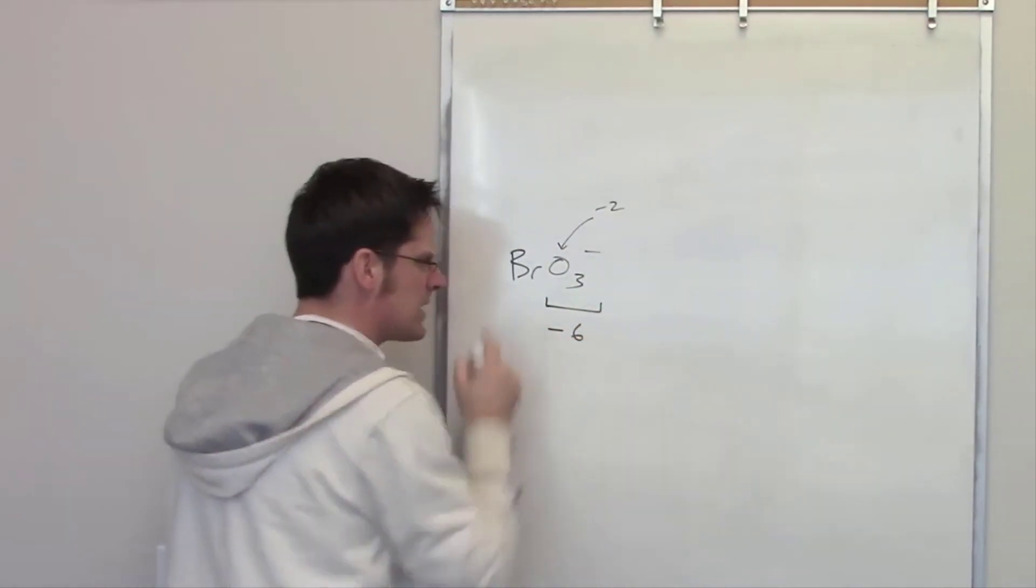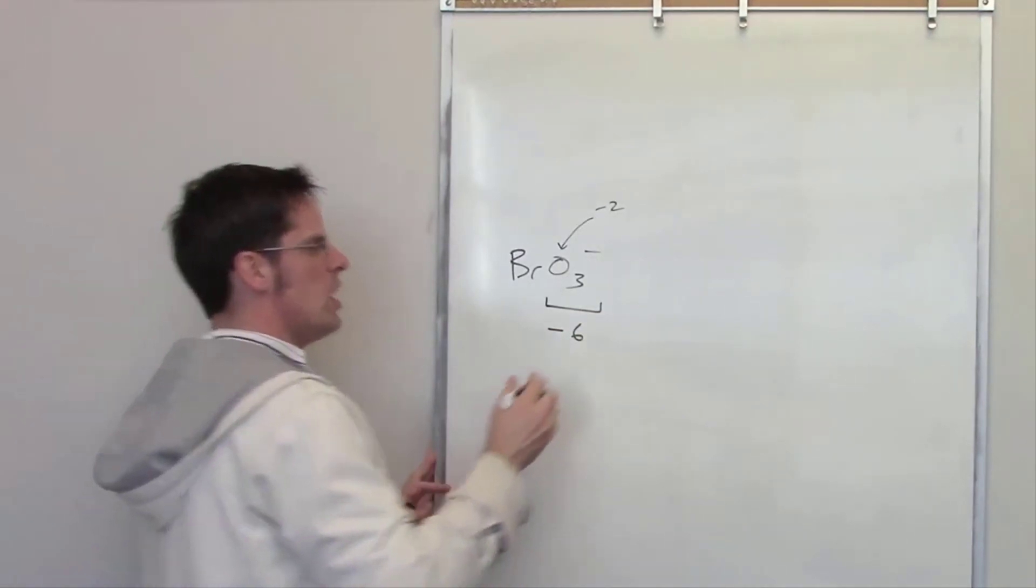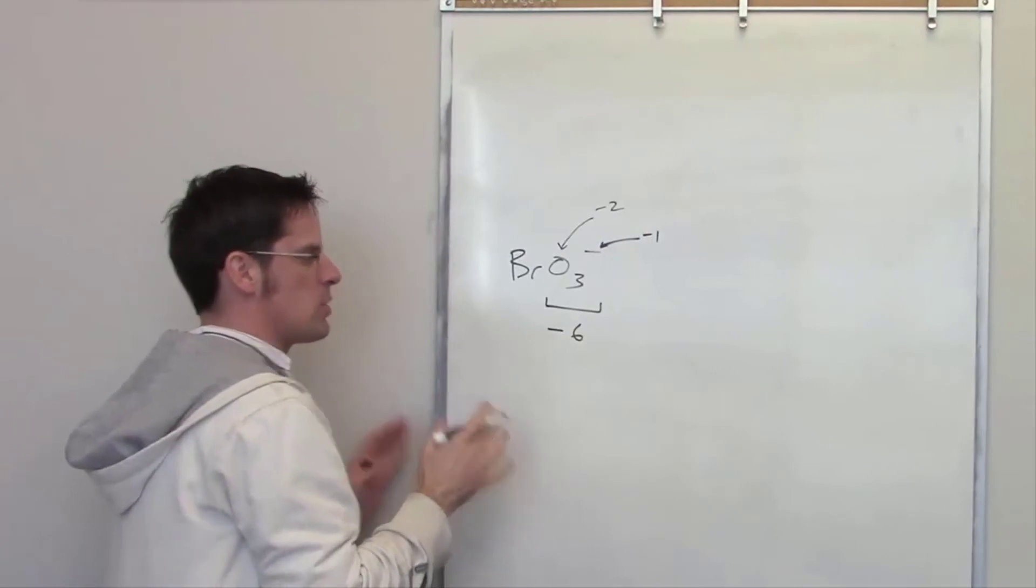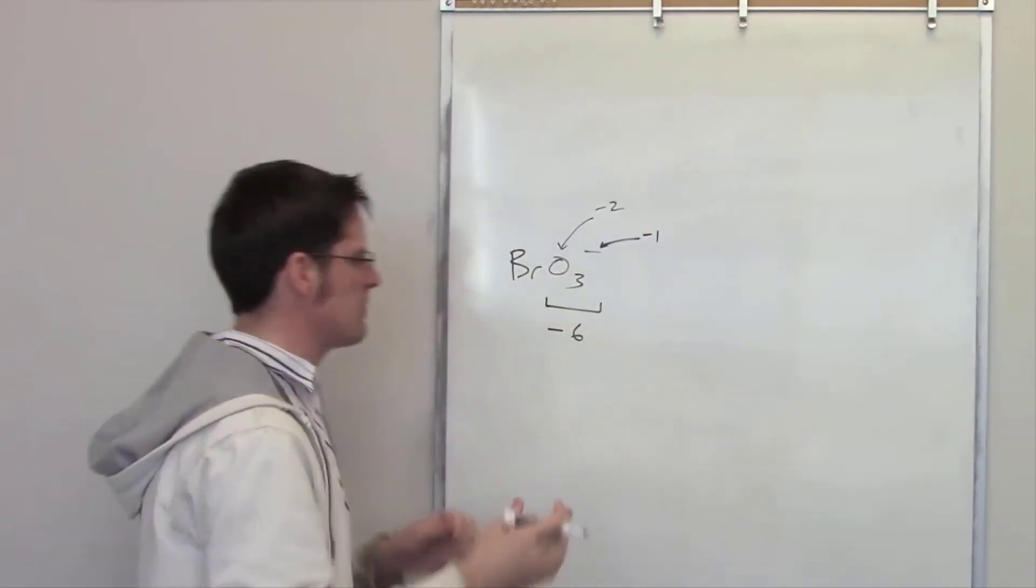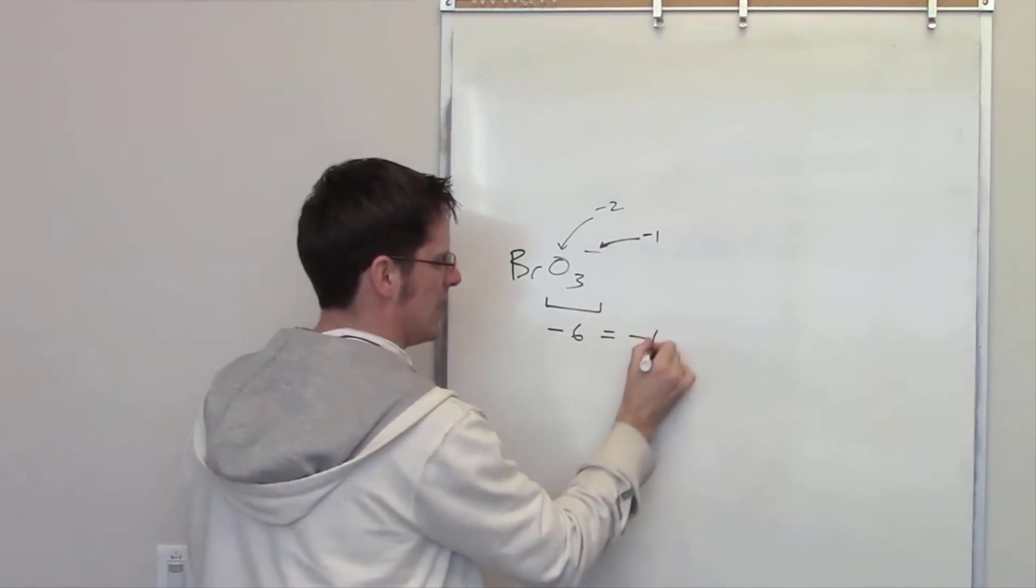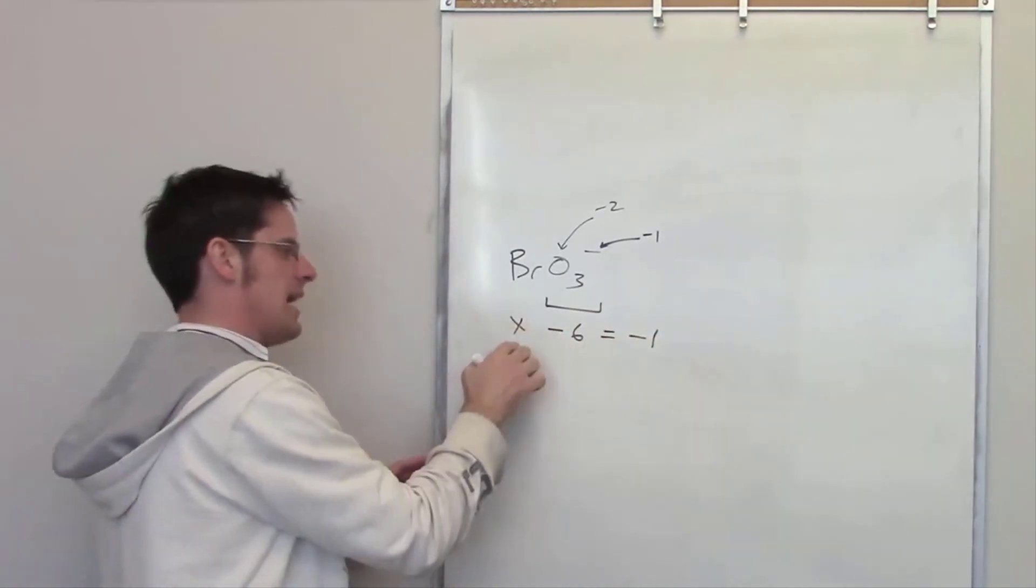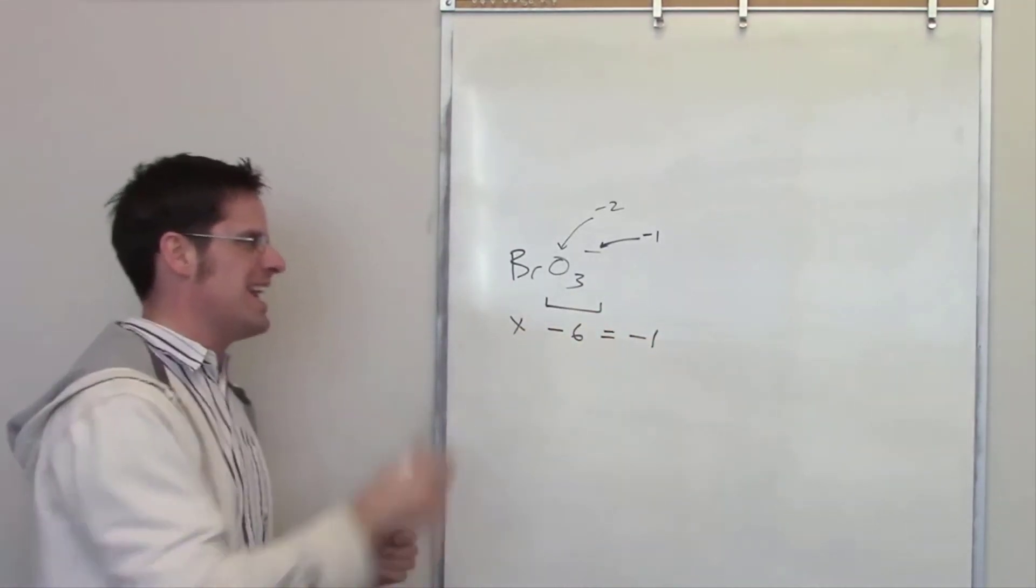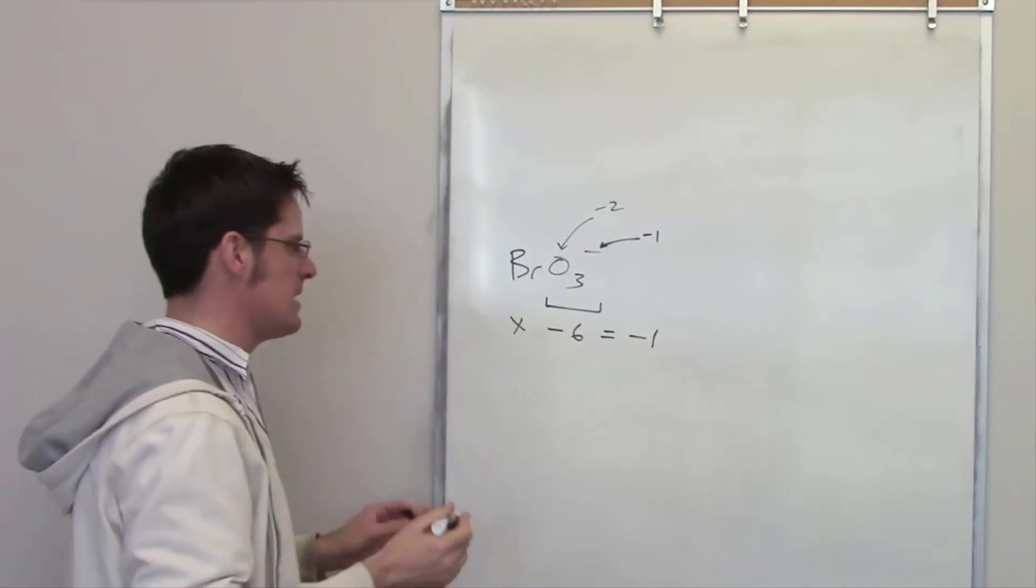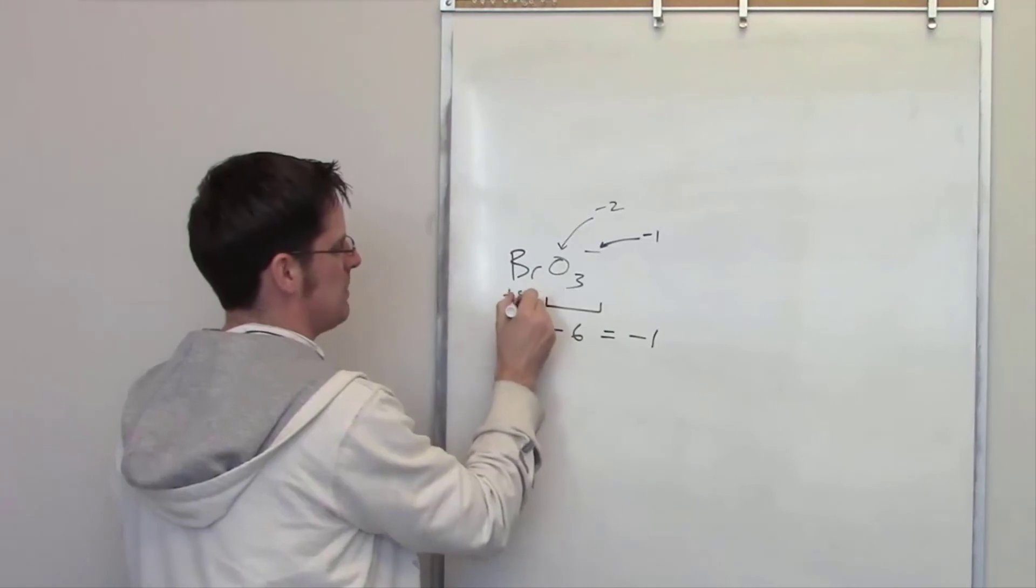Where does that leave you with bromine? Well you'll notice that there's a negative 1 charge right here, so bromine has to have an oxidation number that when added to negative 6 leaves negative 1. In other words, if I put x here, x minus 6 equals negative 1. X is going to be the oxidation number of bromine. What is that? Well obviously it's positive 5.